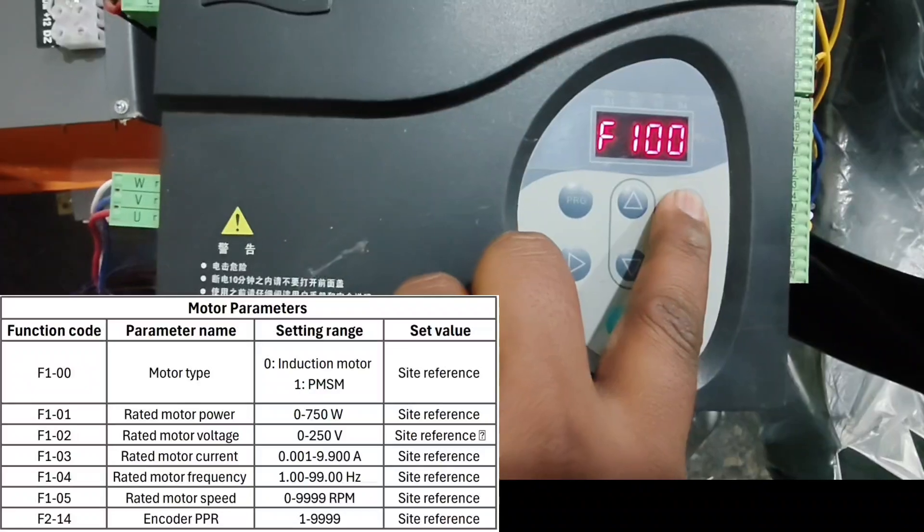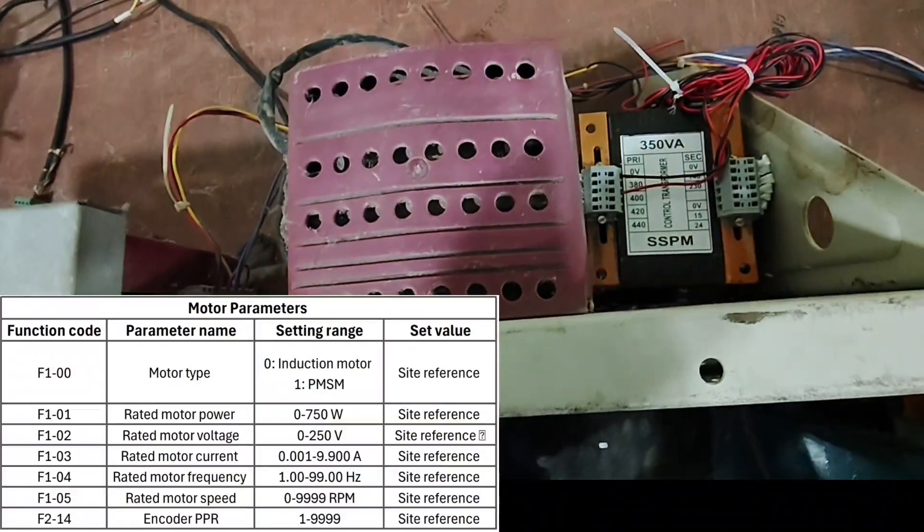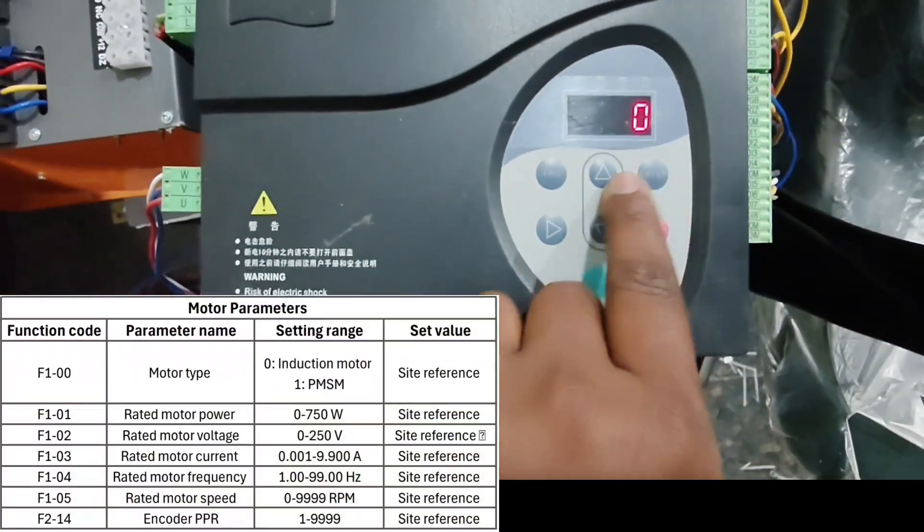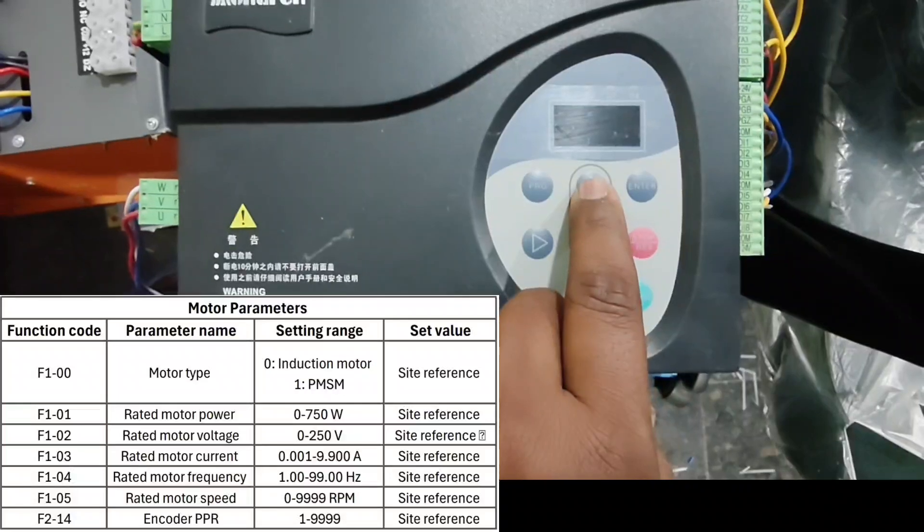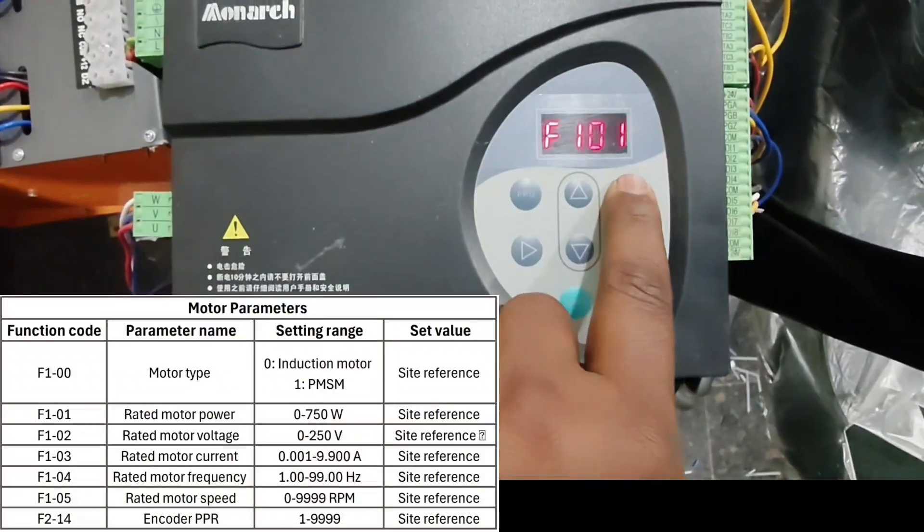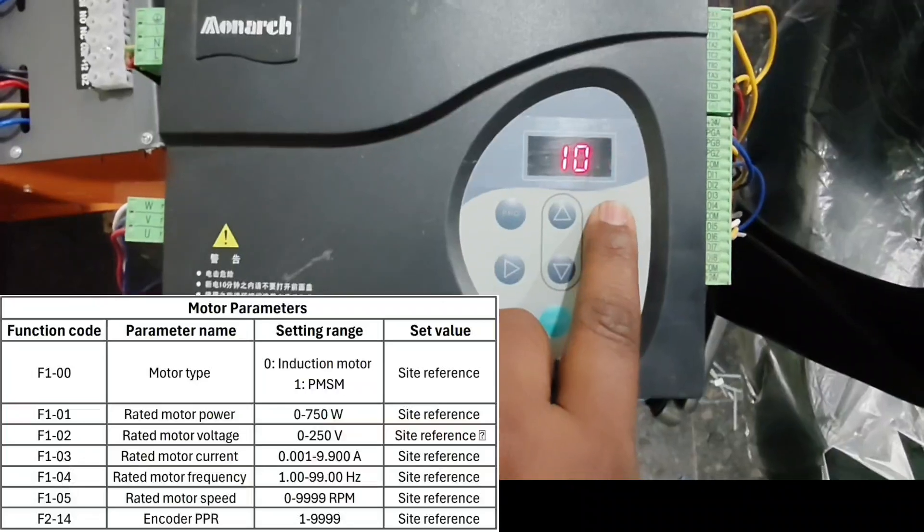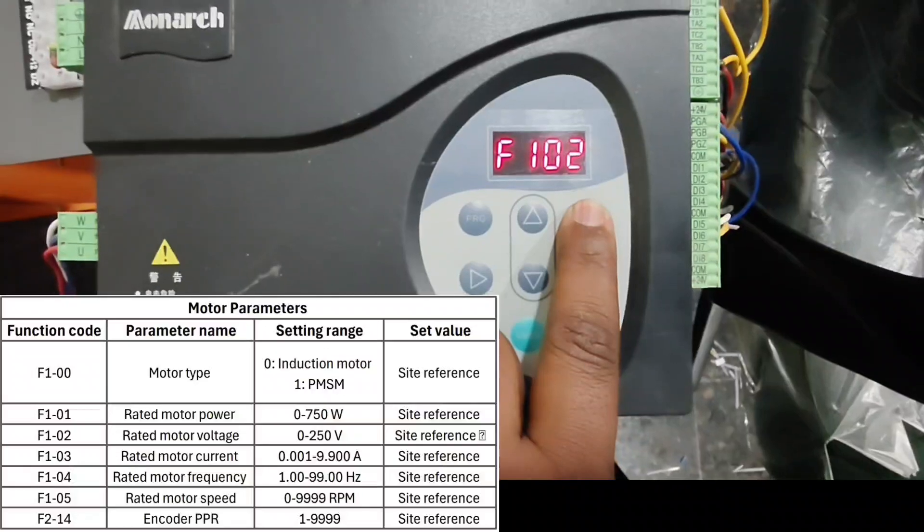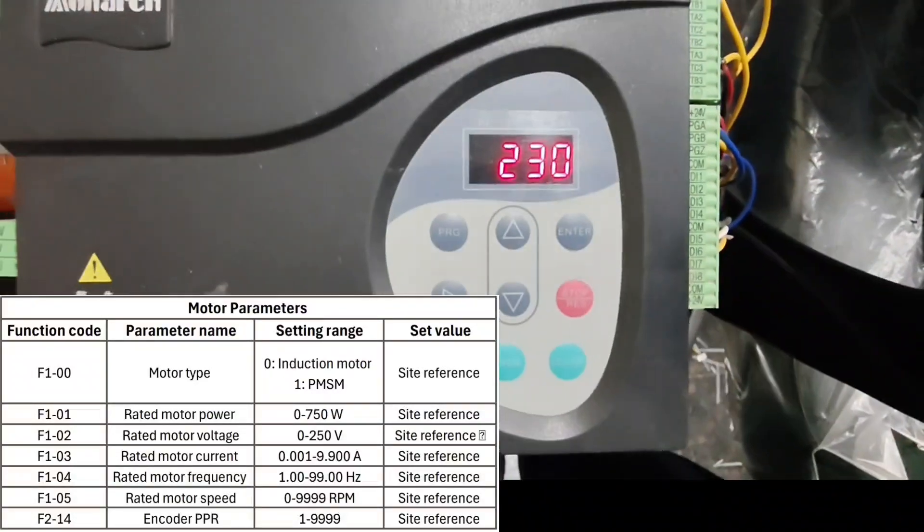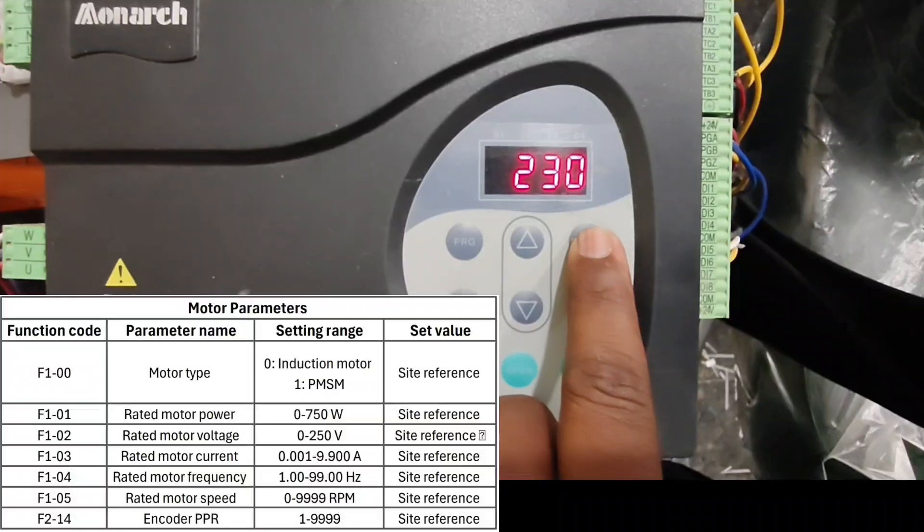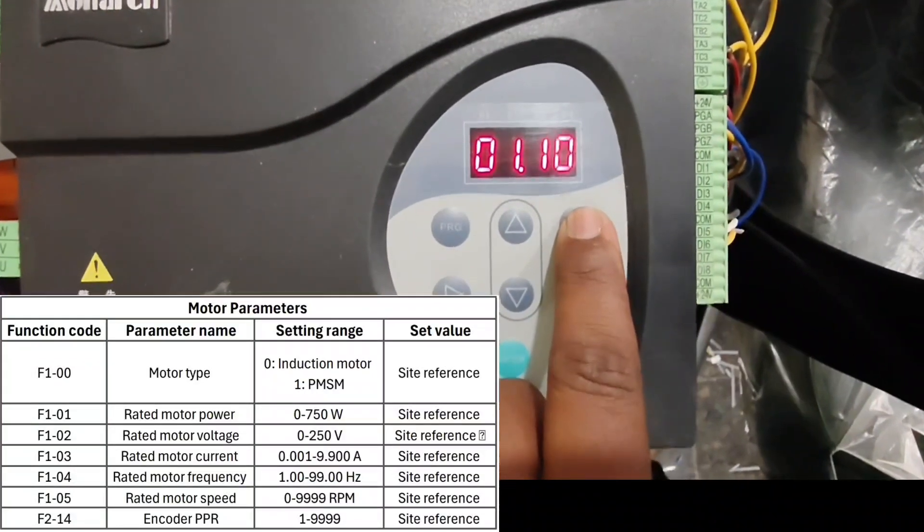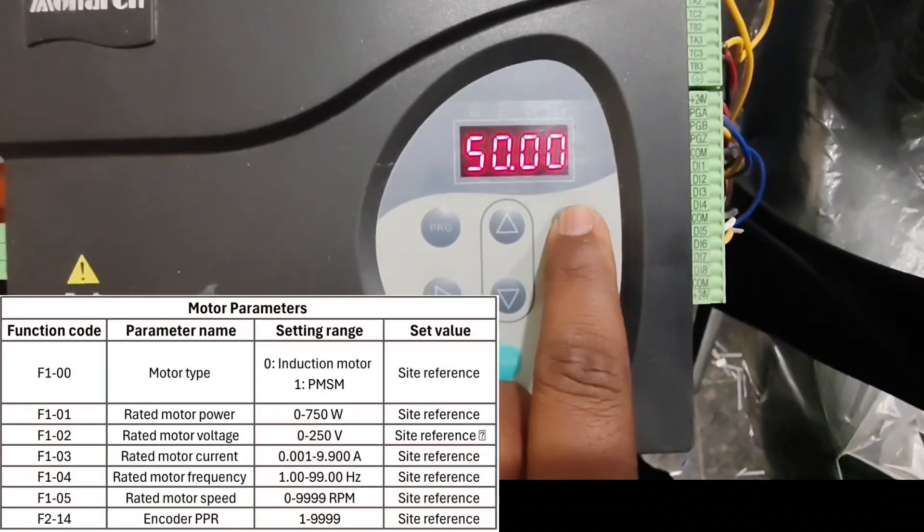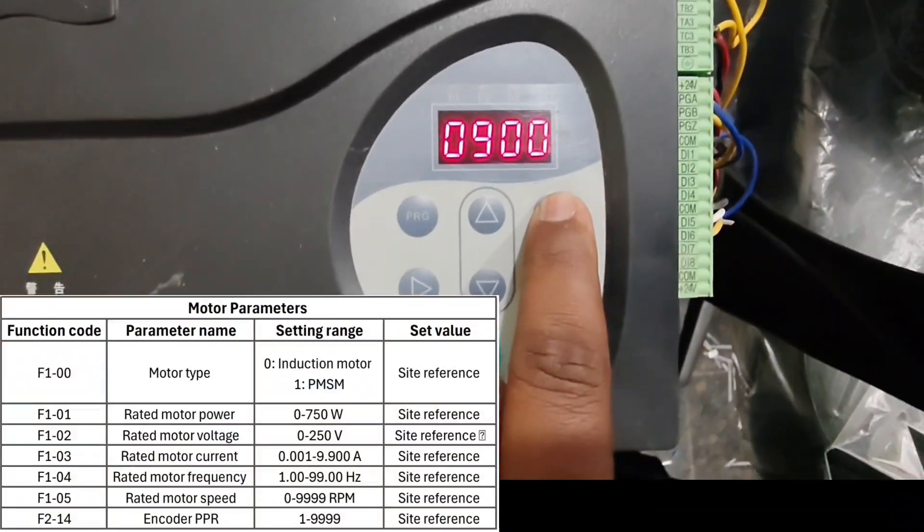F100 is motor type. This is an induction motor, set to 1000. If door motor is a PM motor, set to 1. F101 is motor power, set to 100 watts. F102 motor voltage 230 volts. F103 motor amps 1.10. F104 motor frequency 50 hertz. F105 motor rpm 900.